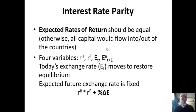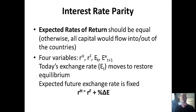Essentially there are four variables: the home interest rate, the foreign interest rate, today's exchange rate, and the expected future exchange rate. Time t is now; t plus one is the future, and we have an 'e' for expectations. Of these variables, the one we're determining—all else equal—is today's exchange rate. That's the thing that's going to move.